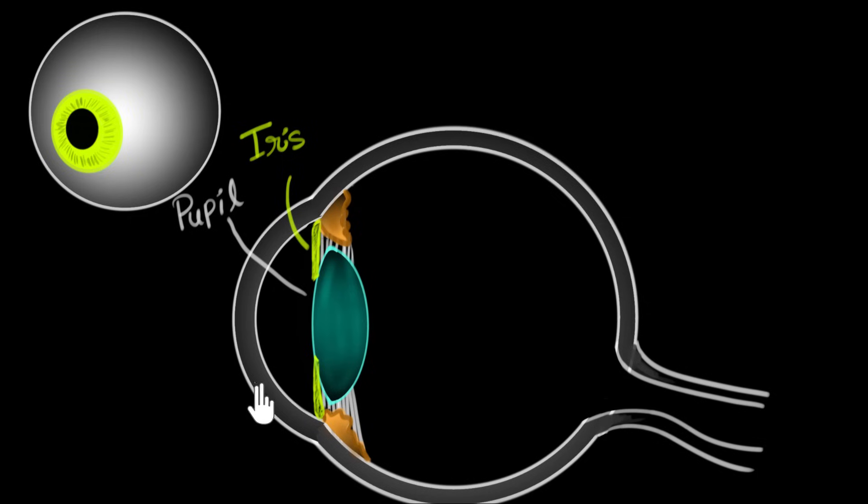This bulged part of the eye, which is in front, is called the cornea. So this is called the cornea. And over here we can see a lens. This is called as the lens of the eye. So it's just called the lens, let's write that down.